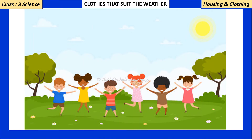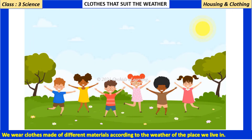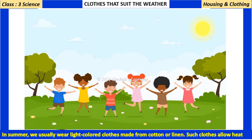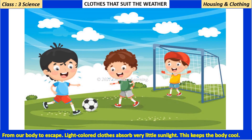Clothes that suit the weather: we wear clothes made of different materials according to the weather of the place we live in. In summer, we usually wear light-colored clothes made from cotton or linen. Such clothes allow heat from our body to escape. Light-colored clothes absorb very little sunlight.